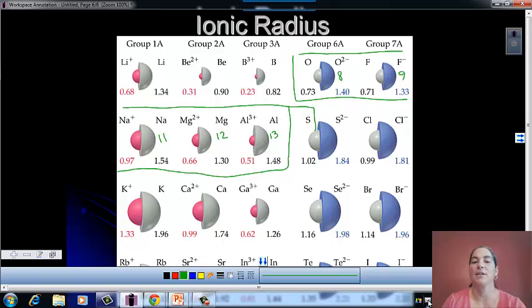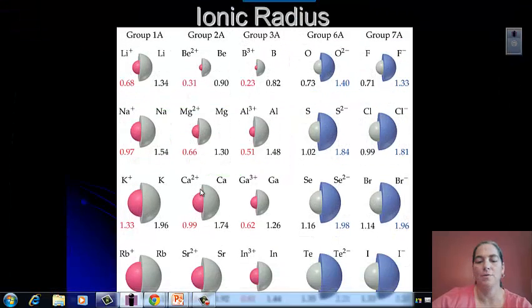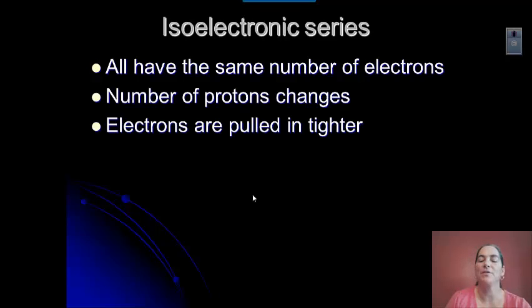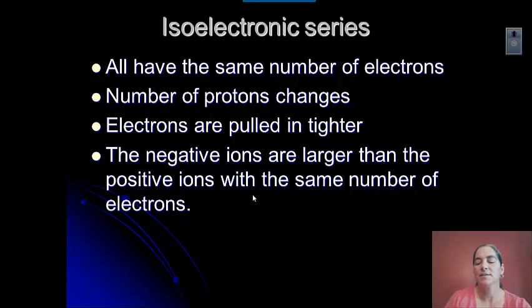If you go in the other direction in an isoelectronic series, so the number of protons decreases, then those ions will get larger. So let's sum that up with another slide here, a few notes for you. So within an isoelectronic series, always the same number of electrons, we have to think about the number of protons changing. So as the number of protons increases, electrons are pulled in tighter, and those negative ions are going to be larger than the positive ions with the same number of electrons.